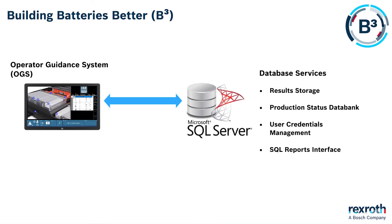The Operator Guidance System has an SQL Server interface. On the database it stores several things. The first is the results — it stores not only the tightening results, but every single thing that goes on in the process: when someone logs on, when somebody presses a button to acknowledge a question — everything gets recorded. The second function is it keeps a copy of the production status of the job. So if a battery is loaded onto one station and is only half manufactured, then there's a material shortage and it's ejected — if it then gets loaded on a different station at a different point in time, the secondary station will collect the status data from the SQL Server and pick up exactly where it left off.